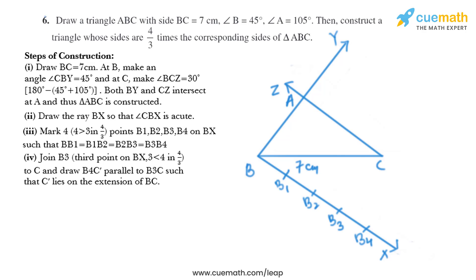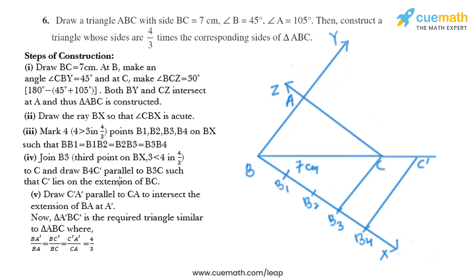Now in the next step we need to join B3 to C. So we'll draw a line like that joining B3 and C. Then we need to draw B4C' parallel to B3C such that C' lies on the extension of BC. So we need to extend BC and then we need to draw a line parallel to C'.